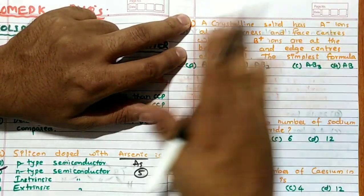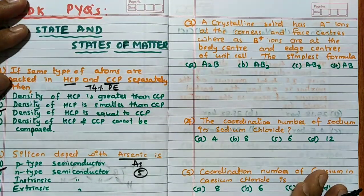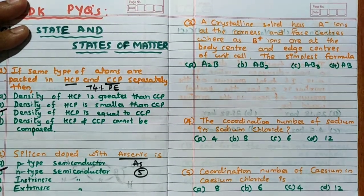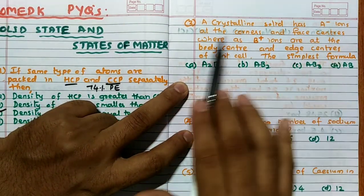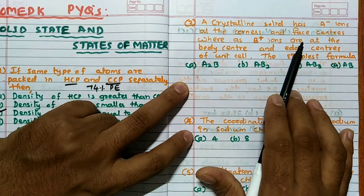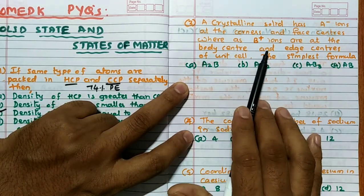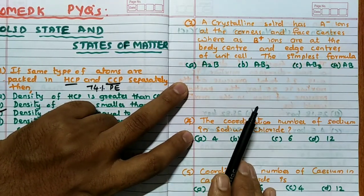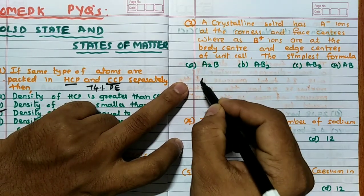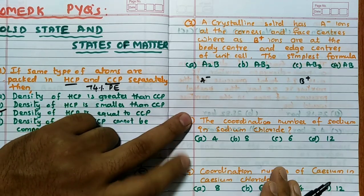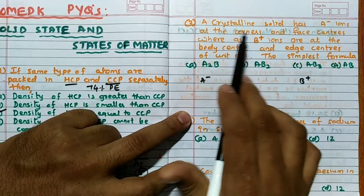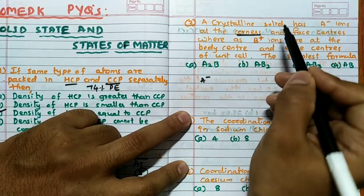Then, crystalline solid has A minus ions at the corners and face centers, whereas B plus ions are at the body center and edge center of the unit cell. Find the simplest formula. First we will see A minus and B plus, how many atoms are present. A minus, they are telling corner and face center.